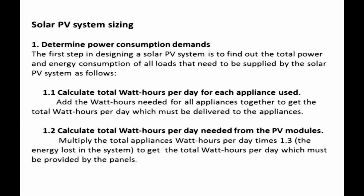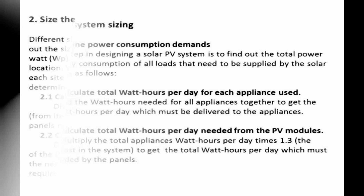Step 1.2: Calculate total watt-hours per day needed from the PV modules. Multiply the total appliances watt-hours per day by 1.3 — accounting for energy lost in the system — to get the total watt-hours per day which must be provided by the panels.